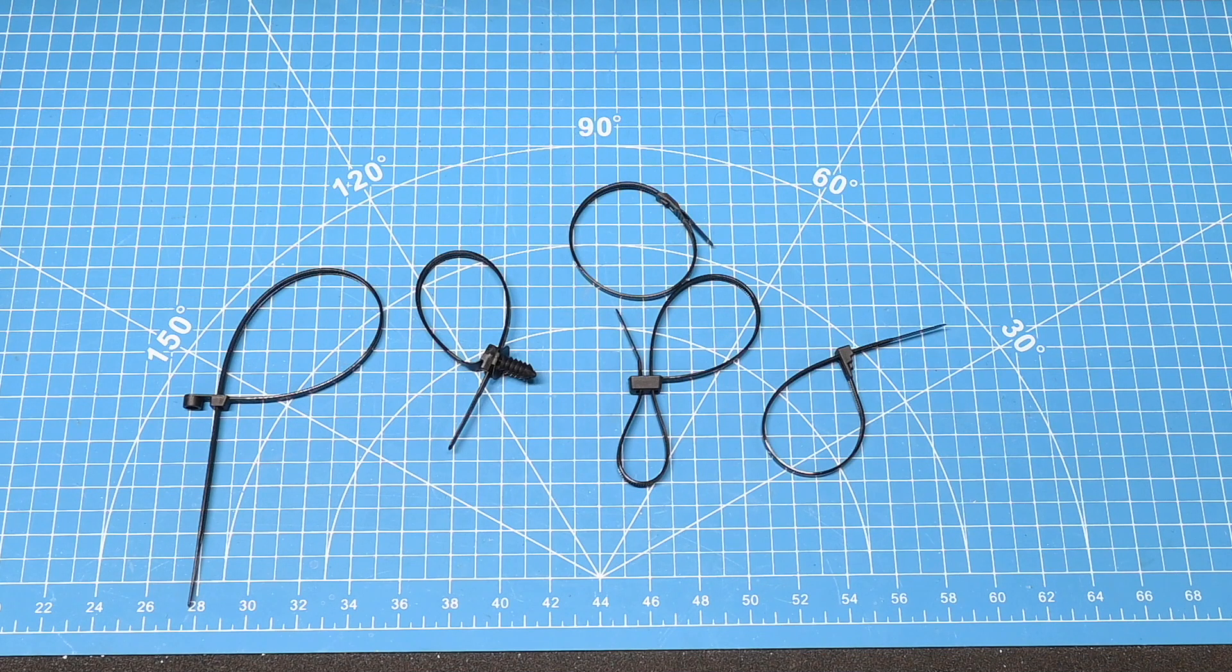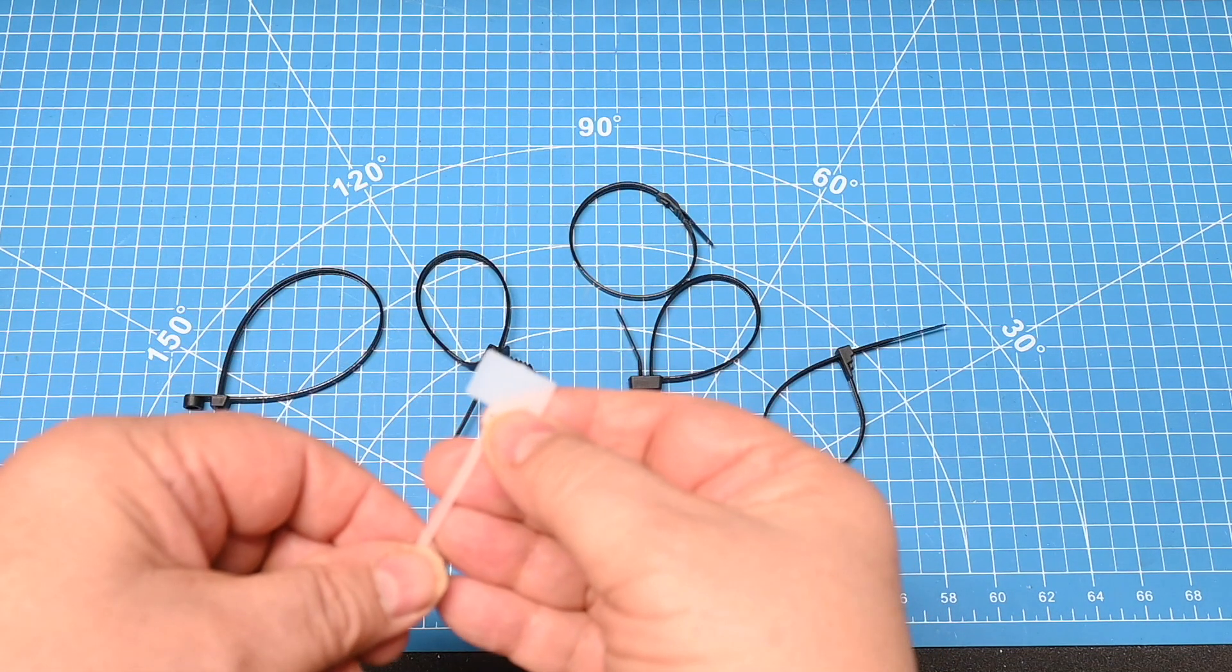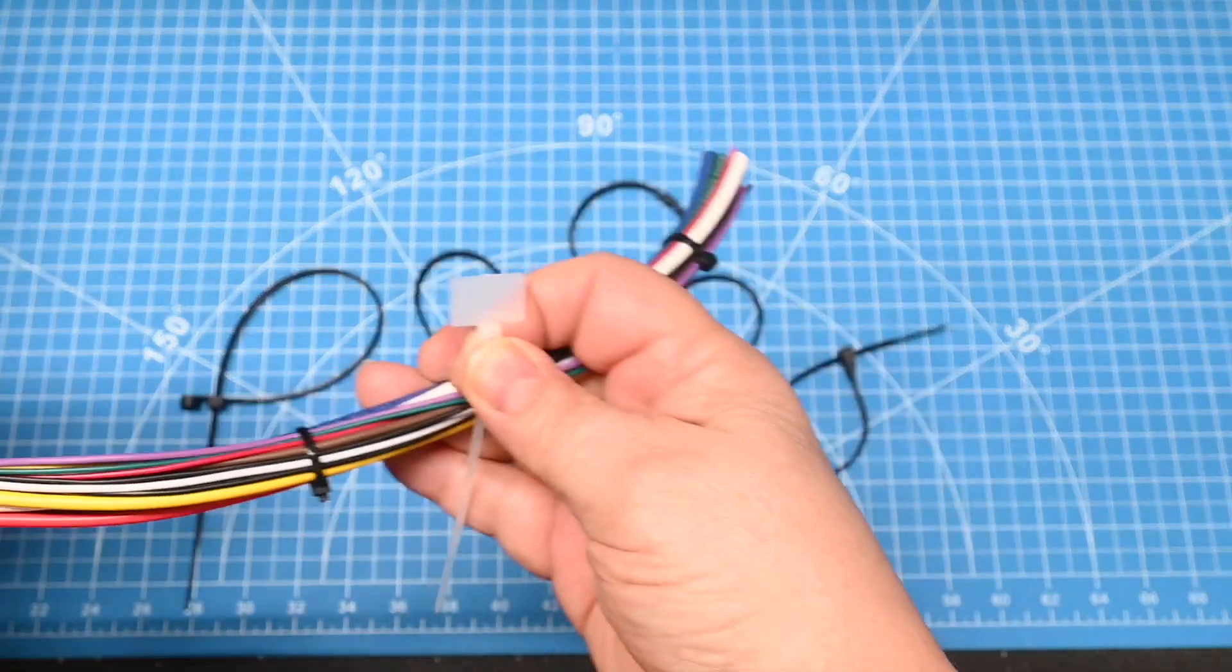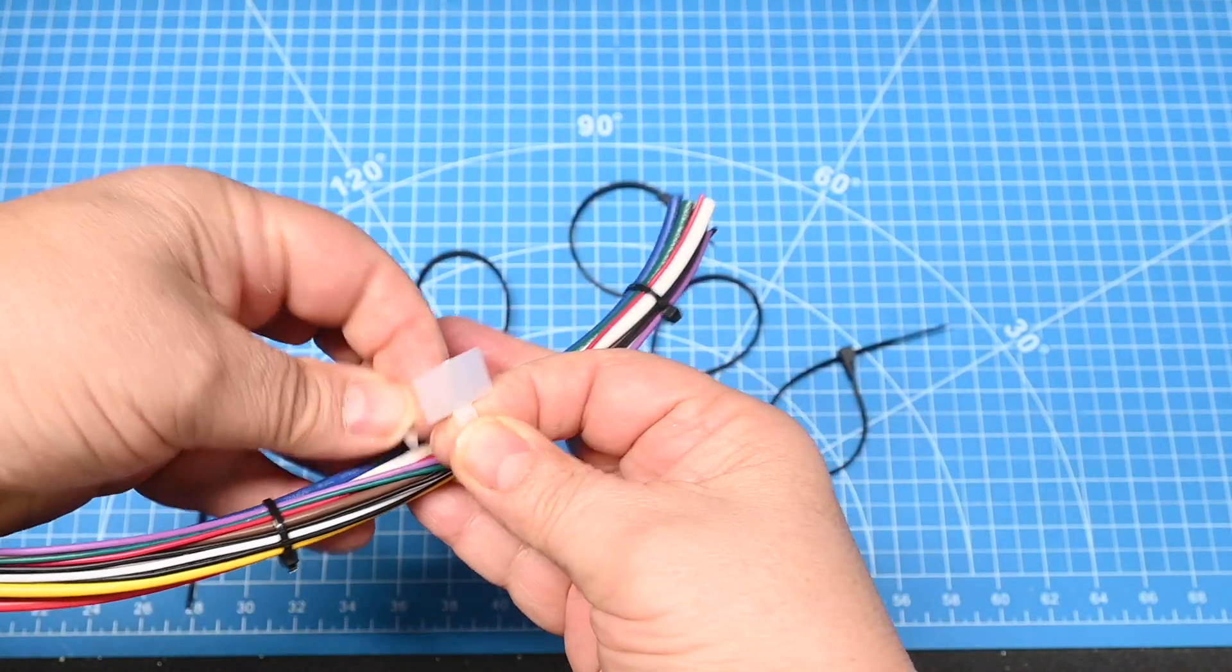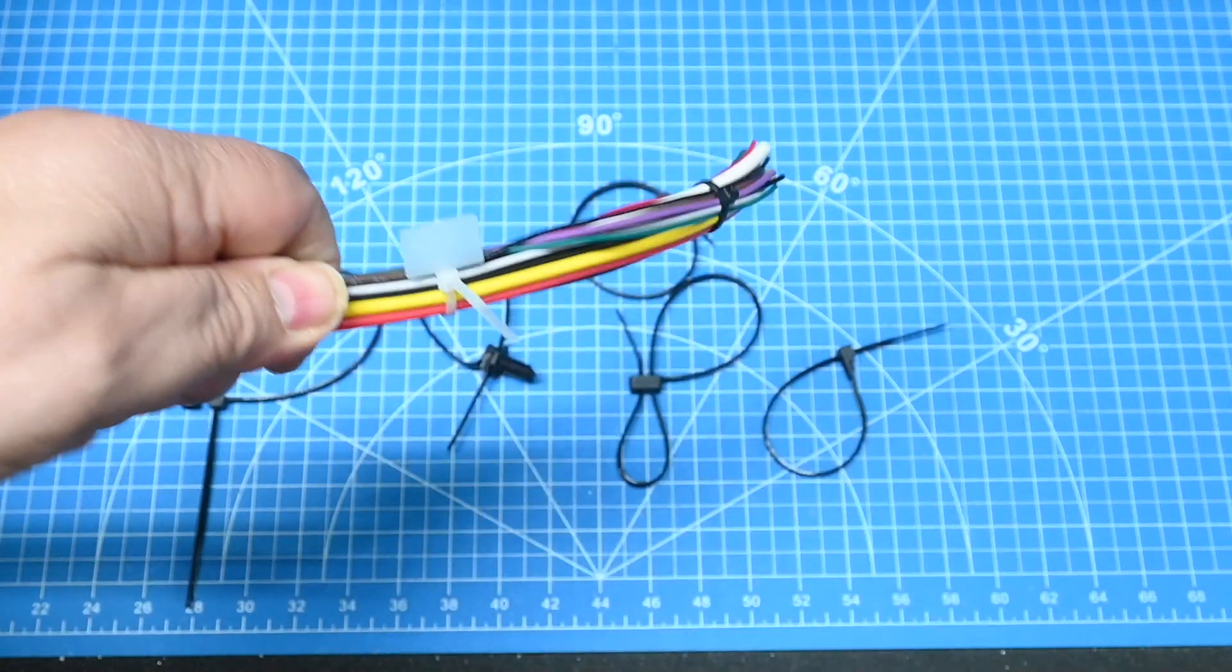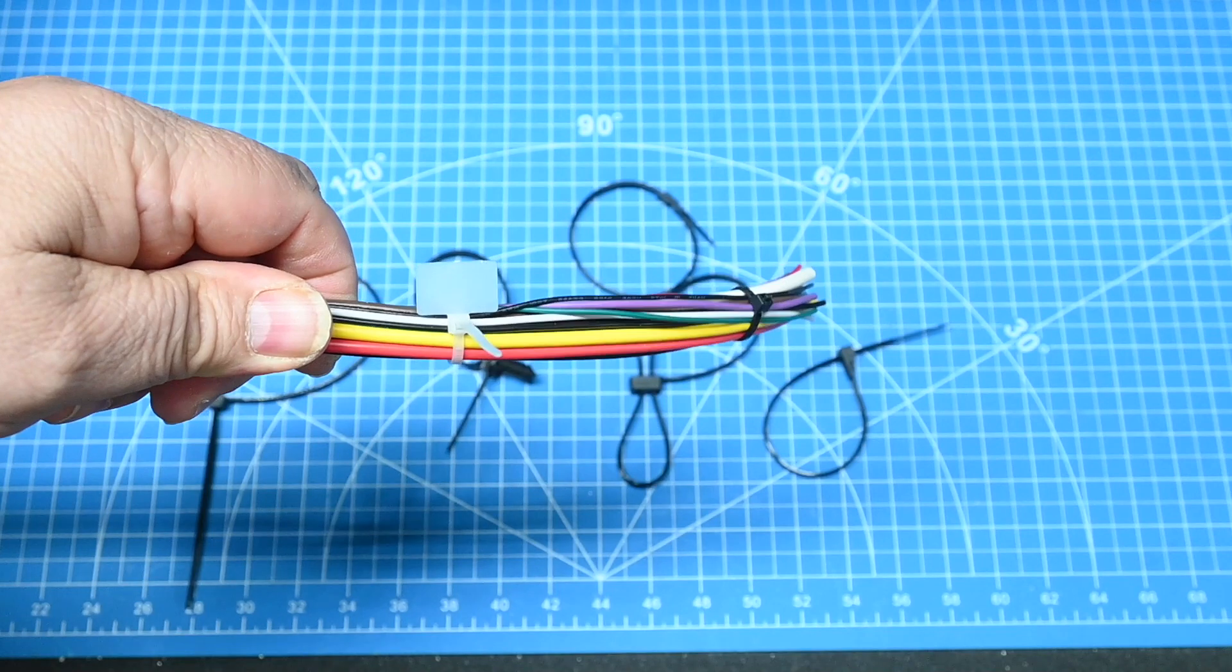So here are five different specialty cable ties that you may not have been aware of. And we'll give you a bonus. This cable tie has a tag on it. You can use that on a cable like that, and you can use that to mark what the function of that cable is.